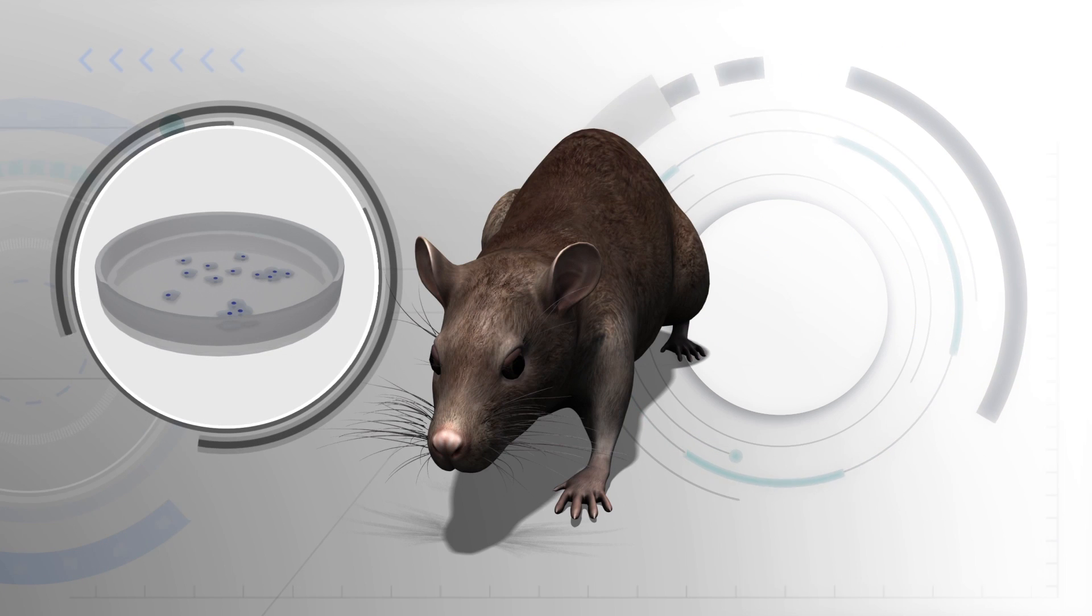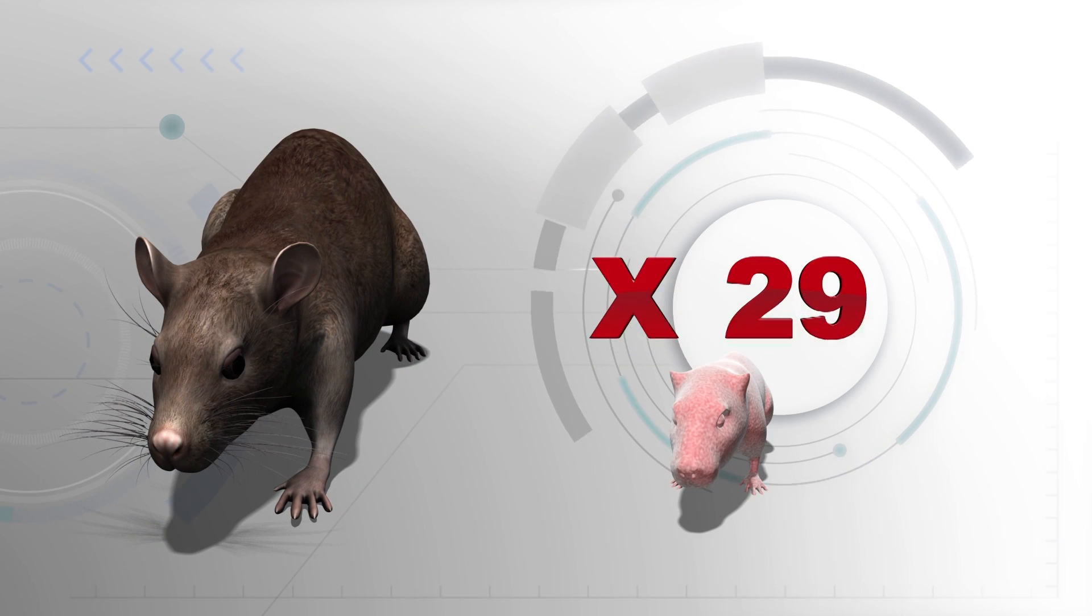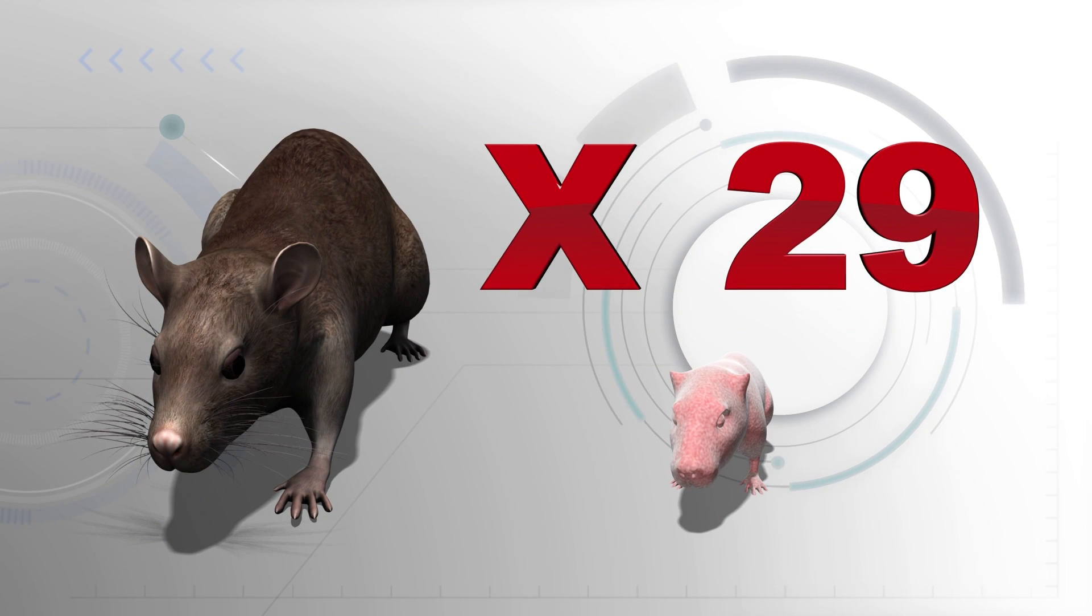The embryonic stem cells were then injected into the eggs of a different female mouse, which developed into embryos. This produced 29 live mice from 210 embryos.